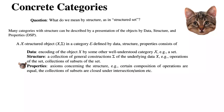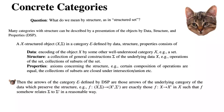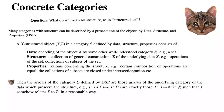There will be compositions of diagrams that commute, or we will have that the collections of subsets are going to be closed under intersection, union, or whatever type of operations can be defined on them. Then the arrows of the category E can be defined by this DSP as those arrows of the underlying category of the data which preserve the structure. For example, f from x-sigma to x-sigma-prime are exactly those arrows f from x to x-prime in x such that f relates the structure sigma to sigma-prime in a reasonable way.